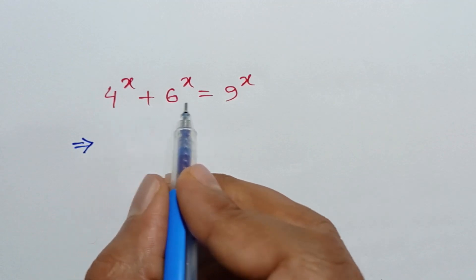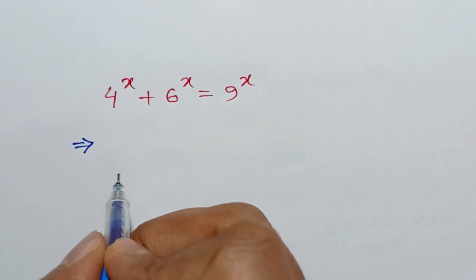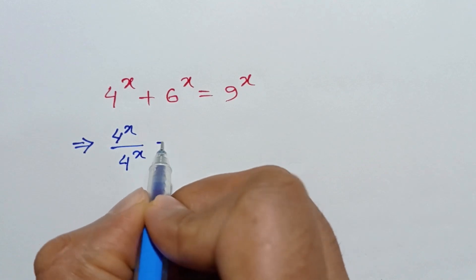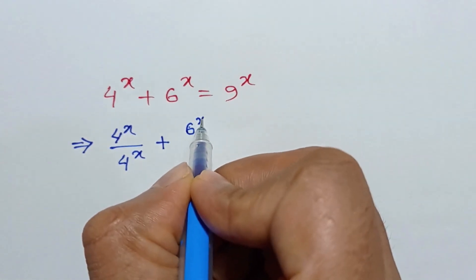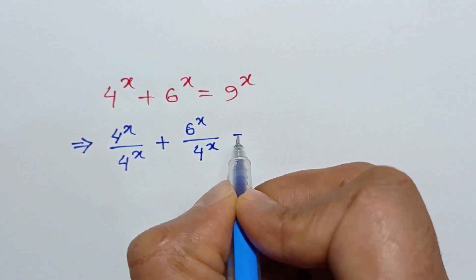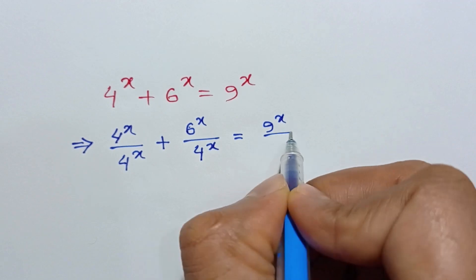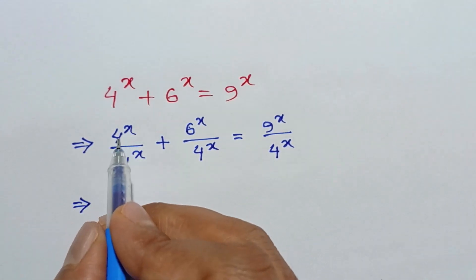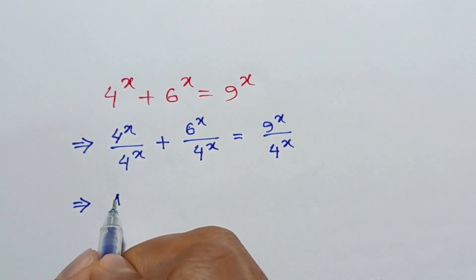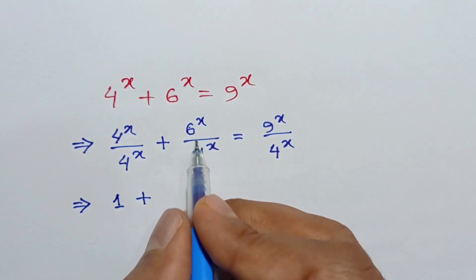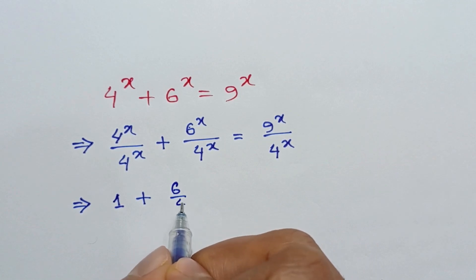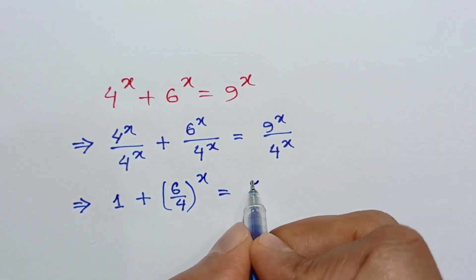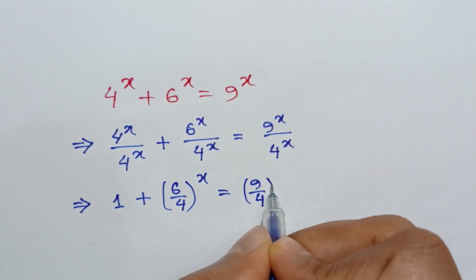If we divide both sides by 4 to the power x, we get: 4^x over 4^x plus 6^x over 4^x equals 9^x over 4^x. The 4^x terms cancel out, so it remains 1 plus (6 over 4) to the power x equals (9 over 4) to the power x.